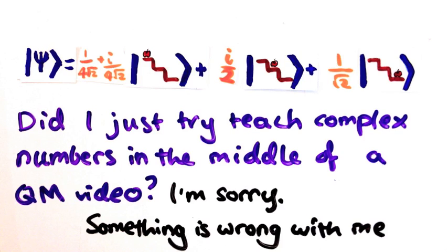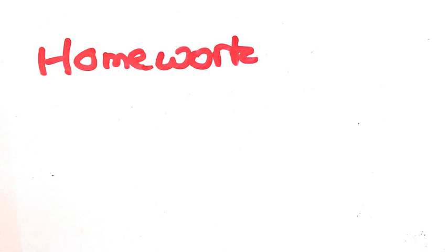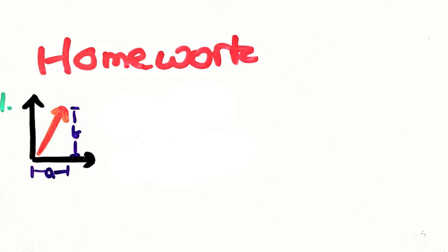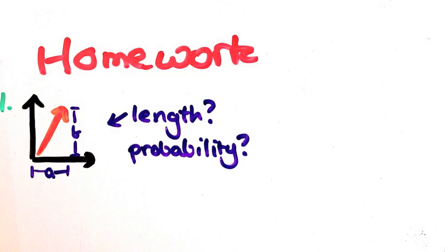And now it's your favourite time of the video, homework time. By the way, I'll type the questions up in the description as well. First a math one. If I have a complex number a plus bi, use Pythagoras' rule to find the length of it. So what's the probability of a state with this coefficient?